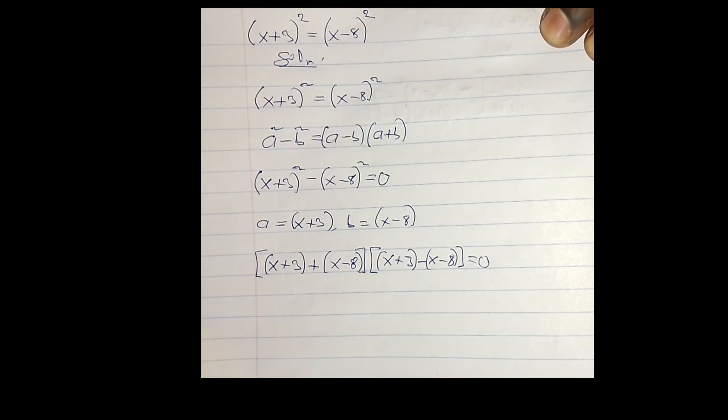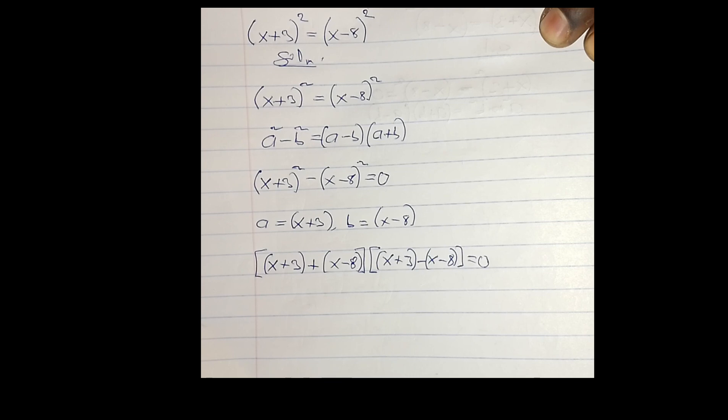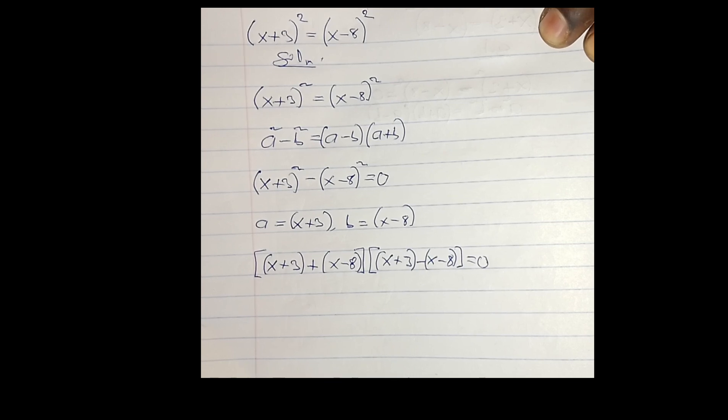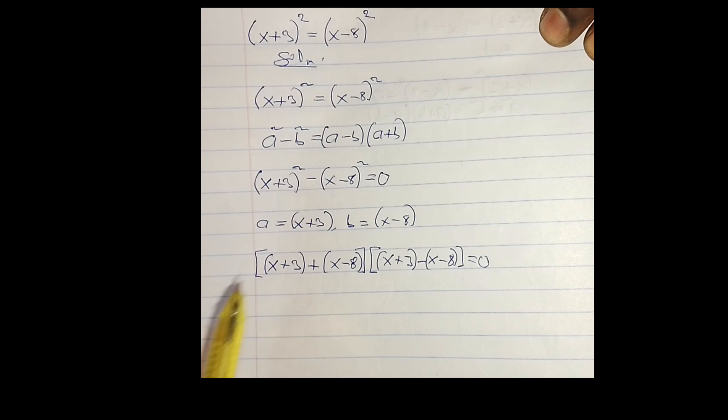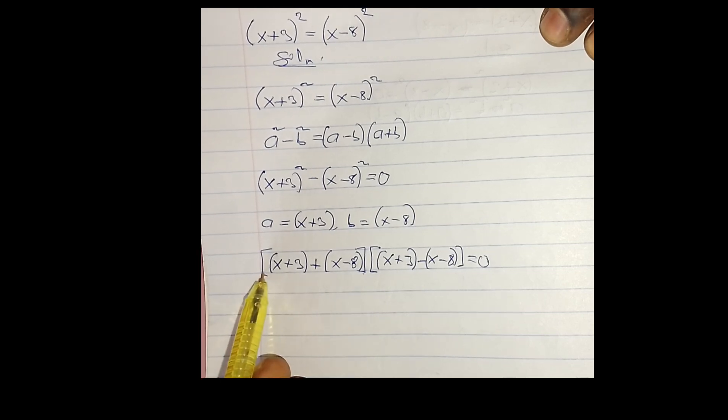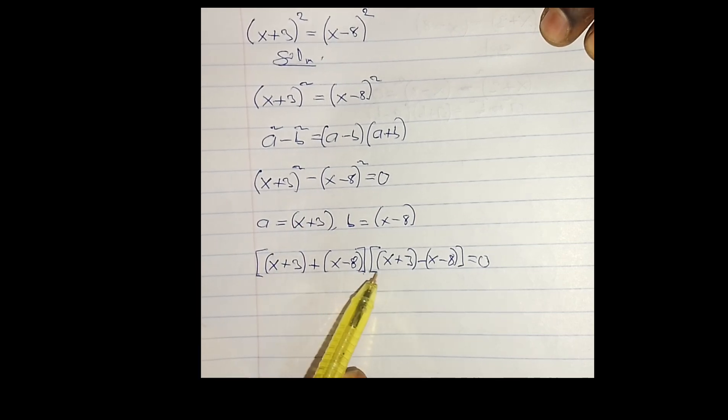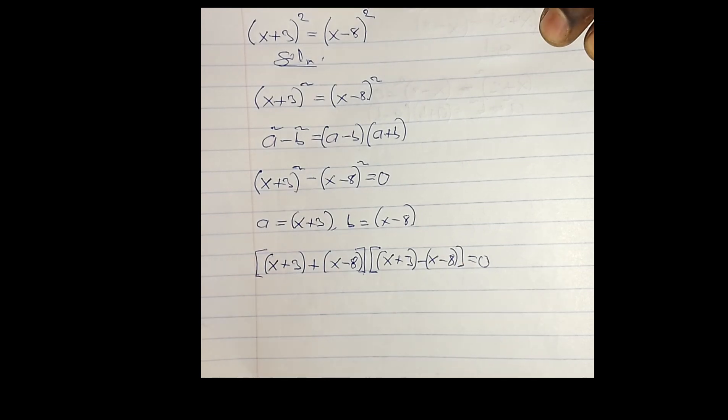I know that whenever I have two numbers or two variables multiplying each other to equal 0, that means one of them is equal to 0. Either this first bracket or this second bracket equals 0.